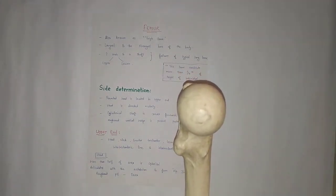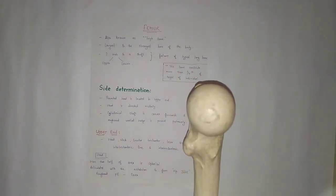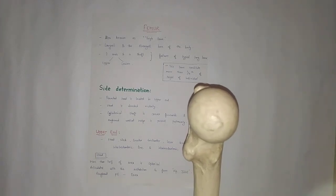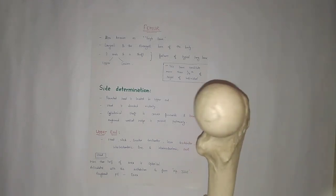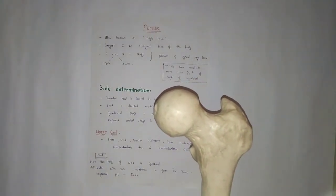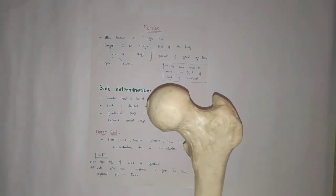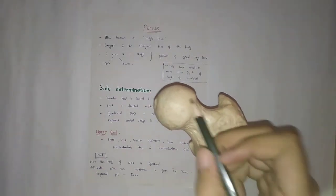This is an artificial bone, but you can definitely find these features in original bones. The head of the femur articulates with the acetabulum for hip joint formation.